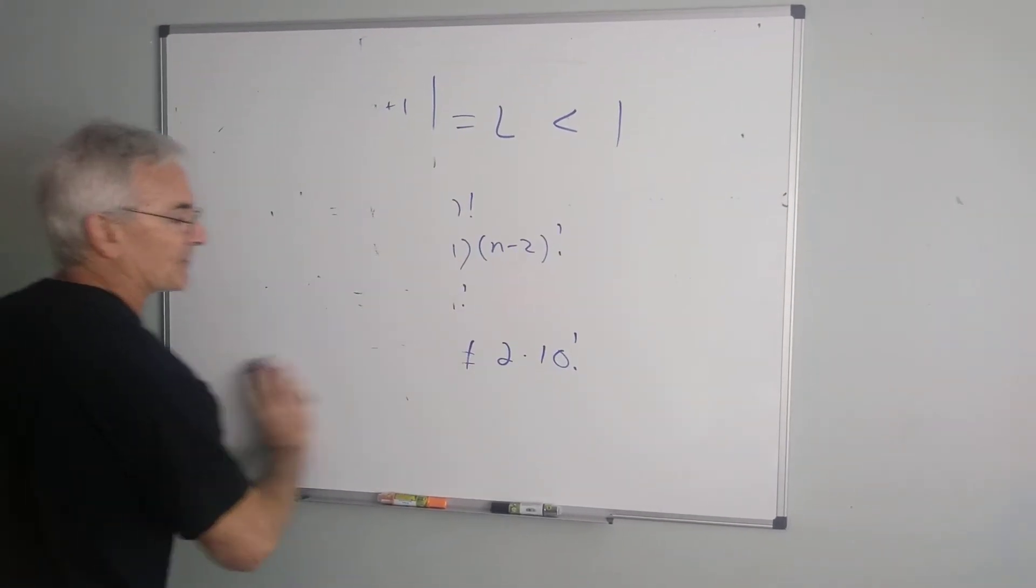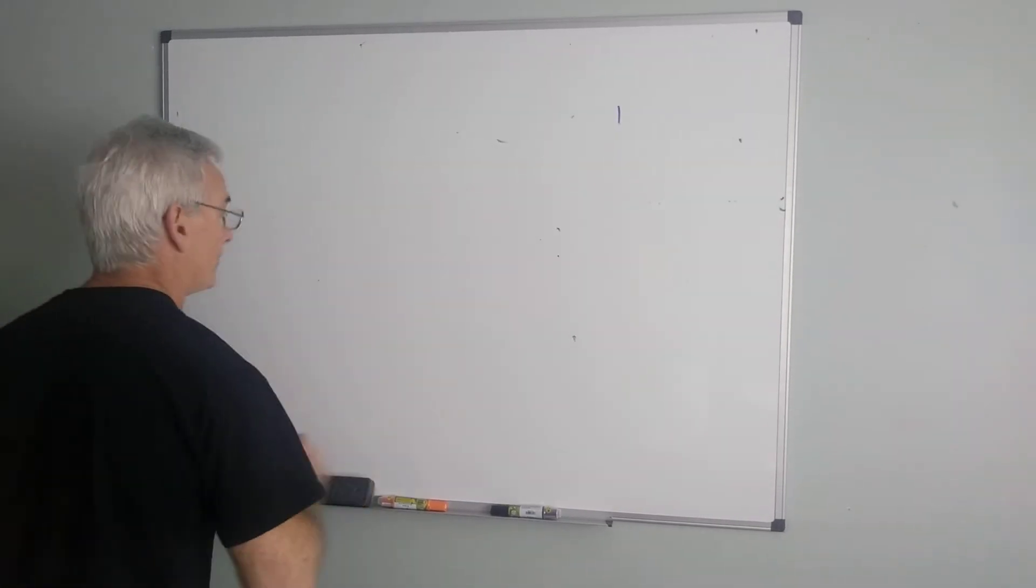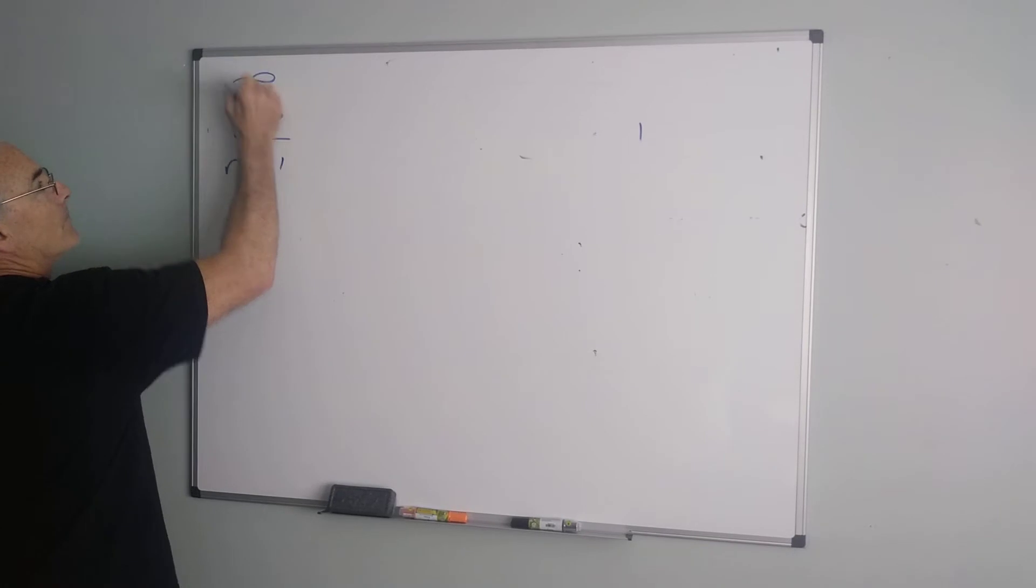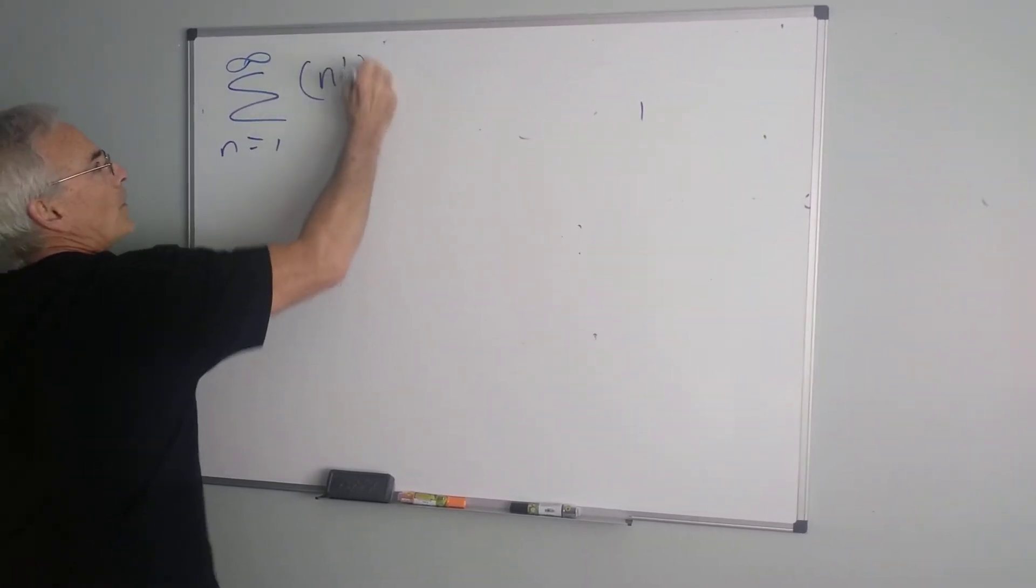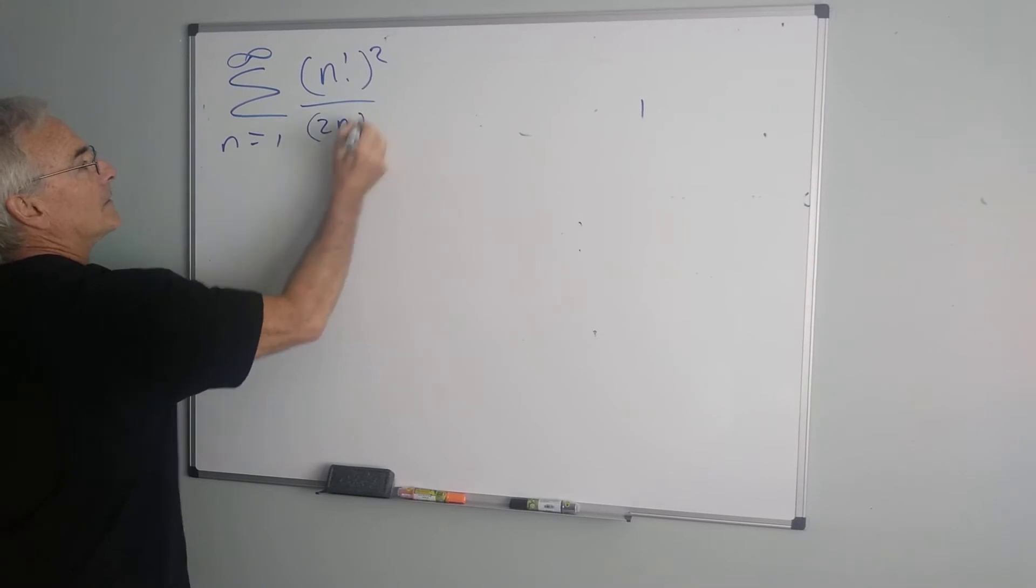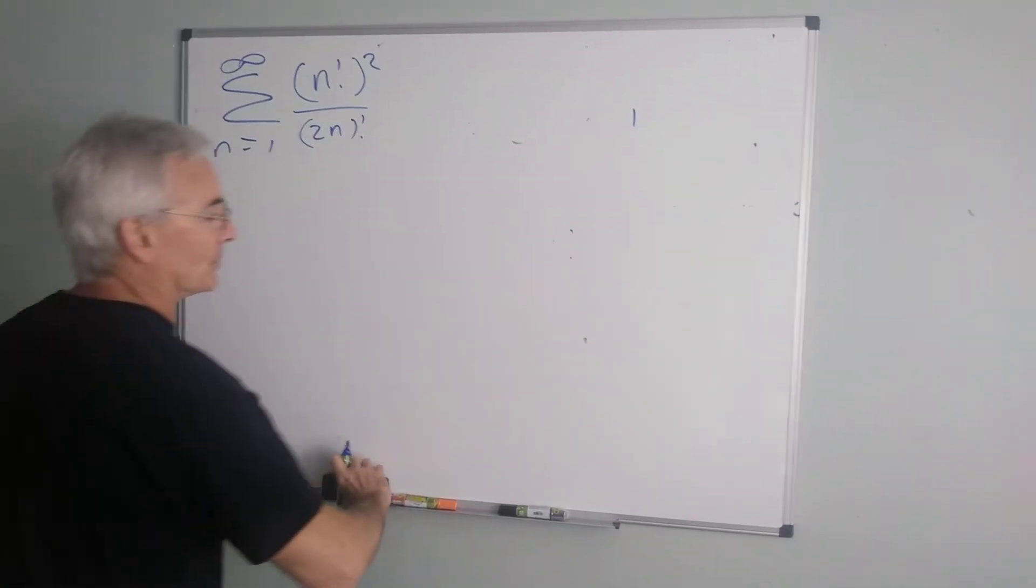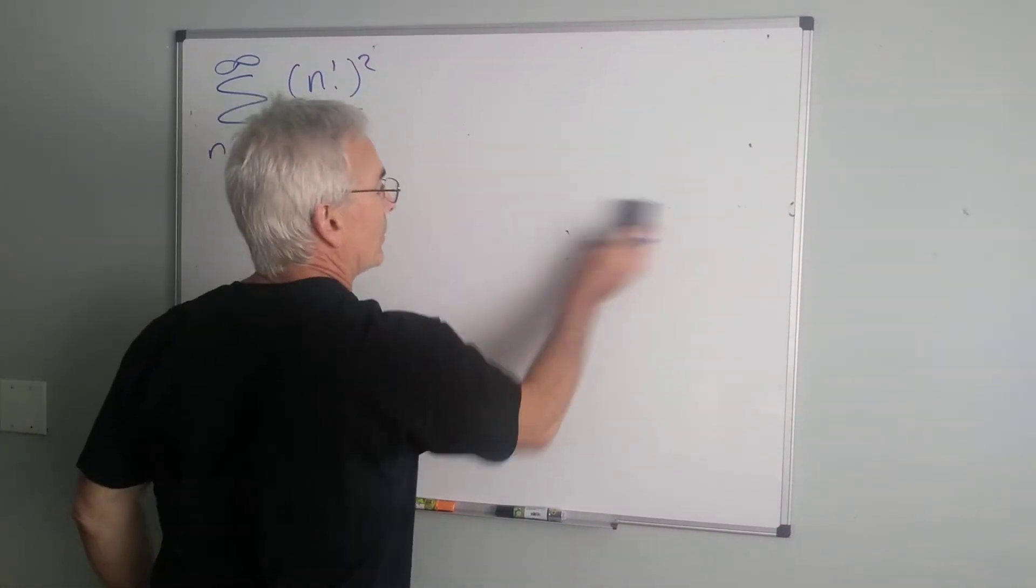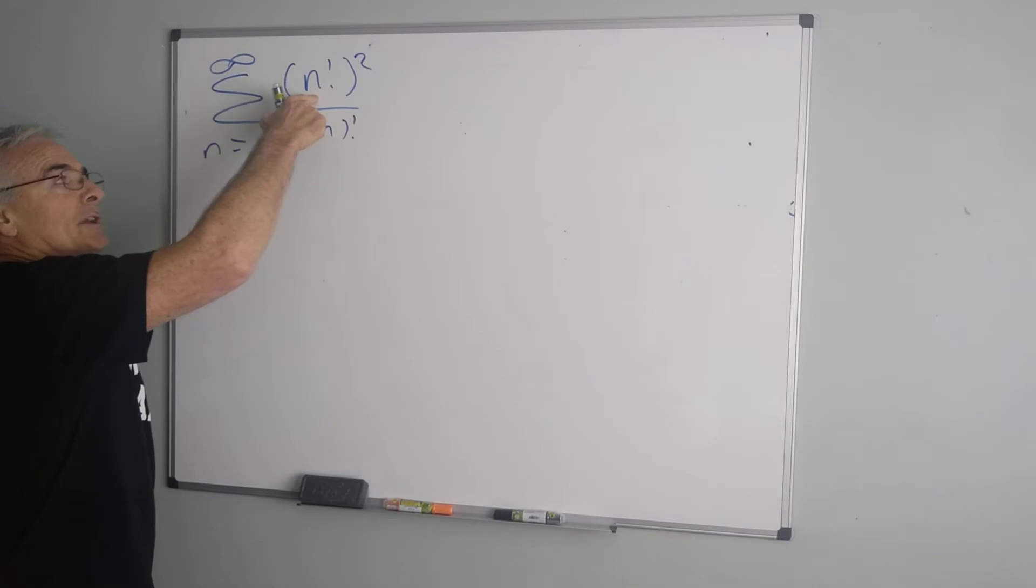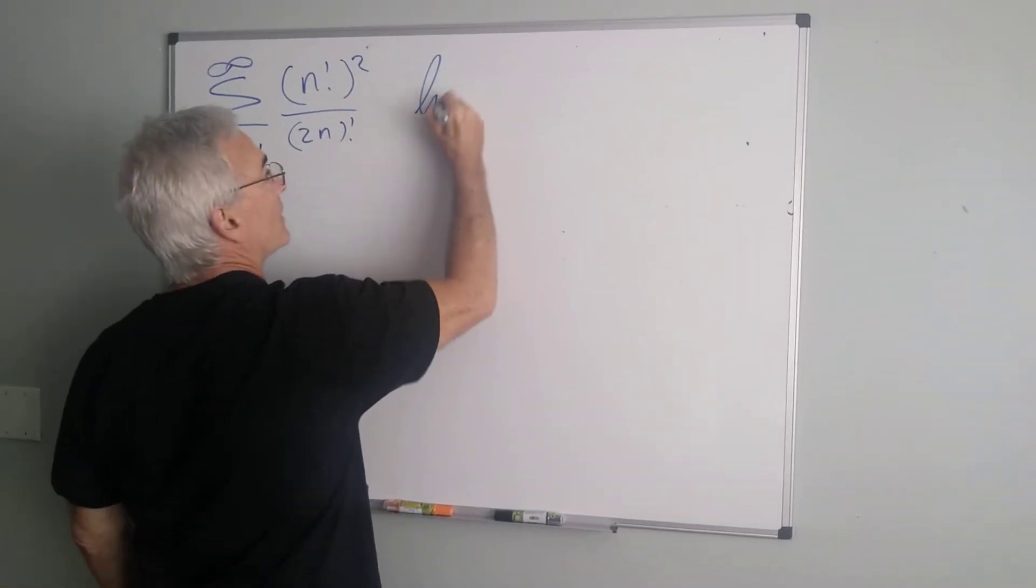Now, we're going to look at a couple of examples that are fairly challenging. The first one, let's consider the sum of n factorial squared over 2n factorial. So, in using the ratio test, I need to write down the consecutive terms, which is a little tricky with factorials, so we want to replace n with n plus 1.